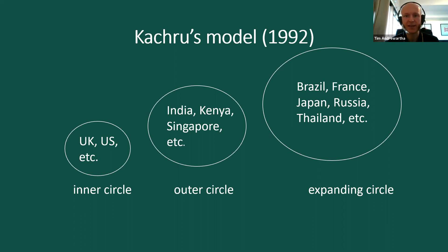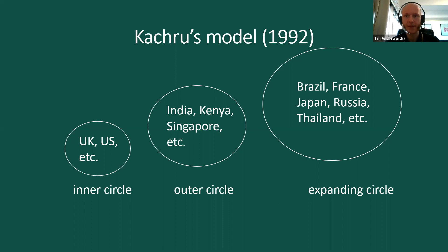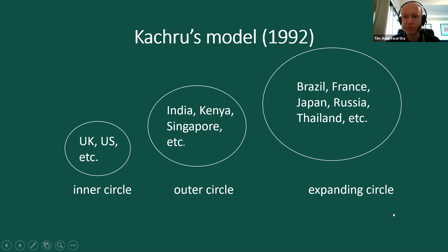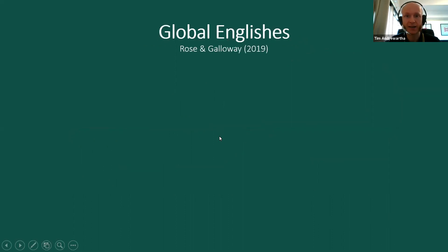There is also the expanding circle, where English is learned as a foreign language — that includes many countries such as Brazil, France, Japan, Russia, Thailand, etc. As English has spread around the world, different varieties have developed, and they are sometimes referred to as global Englishes.